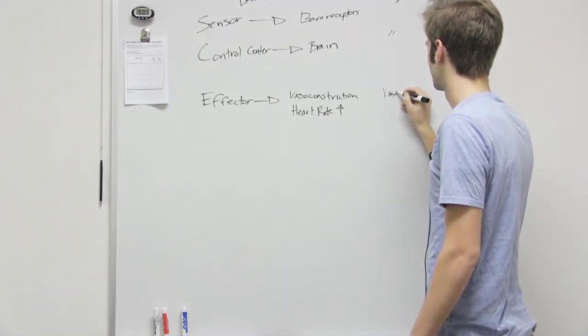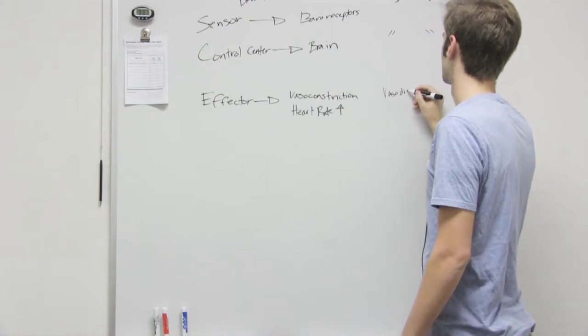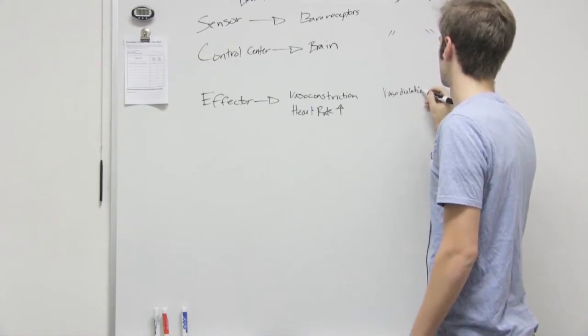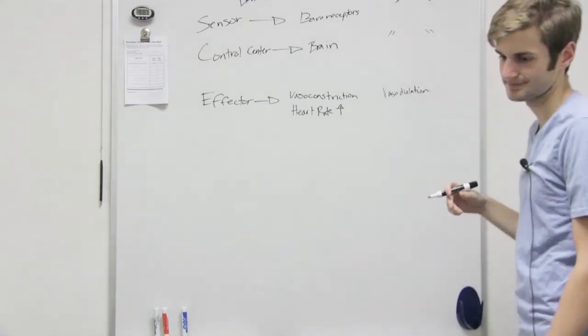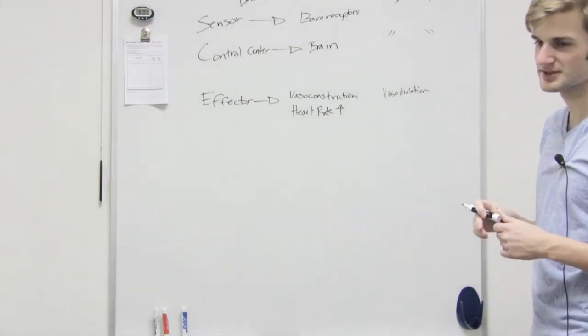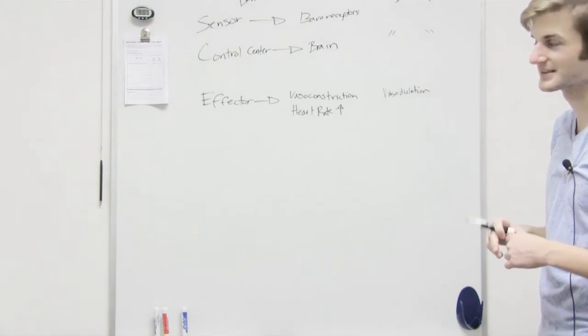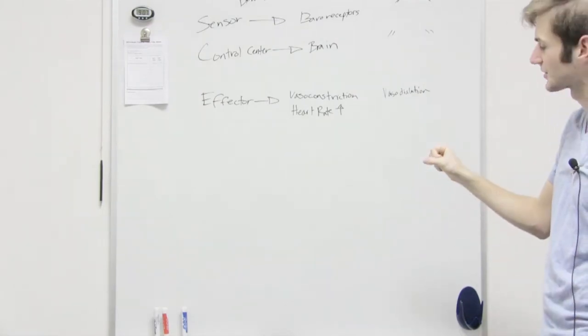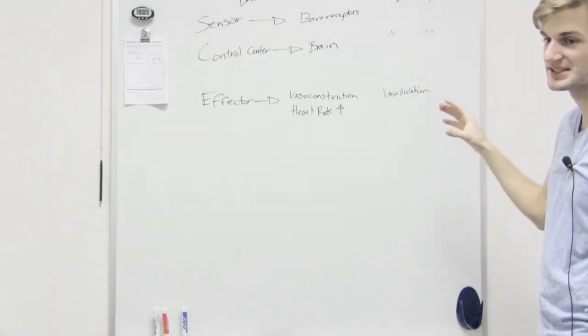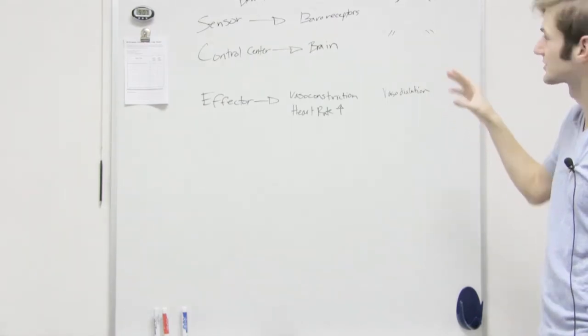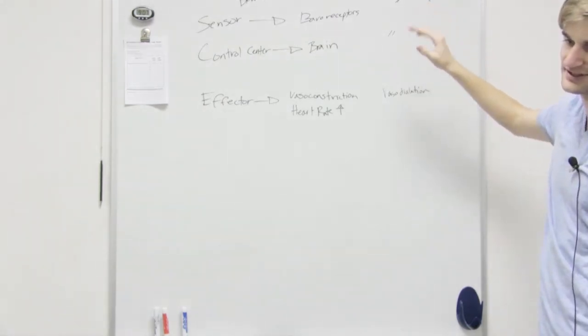So you mentioned this word earlier. Vasodilation. What does it mean to dilate? To like, I don't know, like dilate your eyes, get bigger? Get bigger. Exactly. So it's those blood vessels opening up and getting bigger, which would decrease the pressure. So it's helping the high blood pressure decrease.